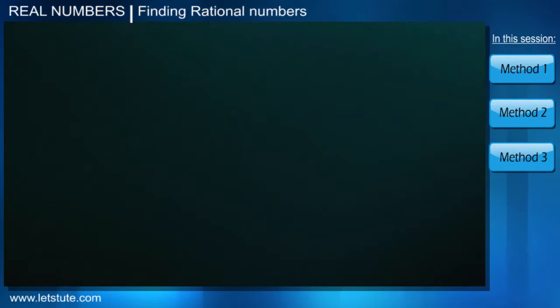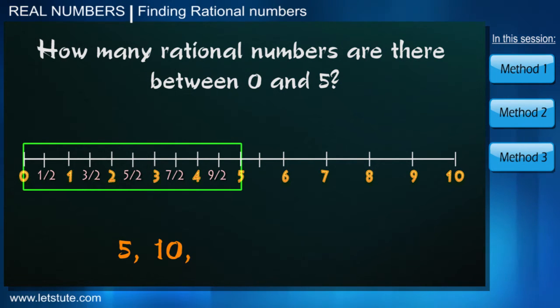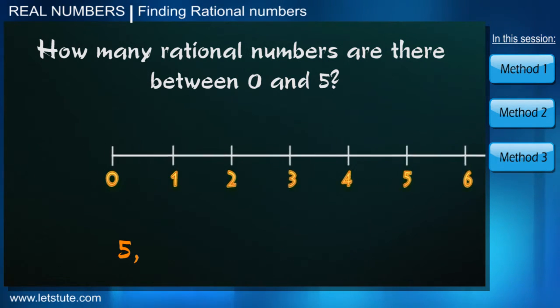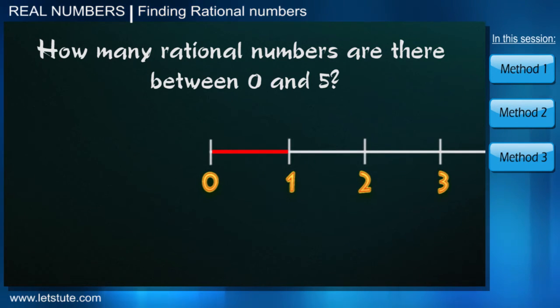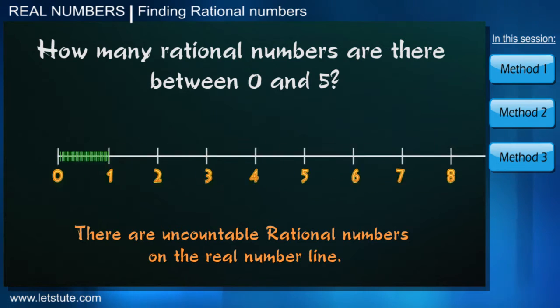So before we start with anything, tell me how many rational numbers are there between 0 and 5? 5, 10, 100? There are actually many numbers. In fact, even if you choose the smallest interval, there are many rational numbers. And so we conclude that there are uncountable rational numbers on the real number line.